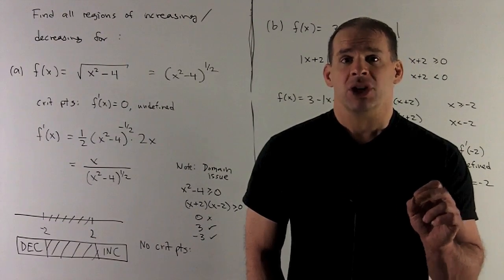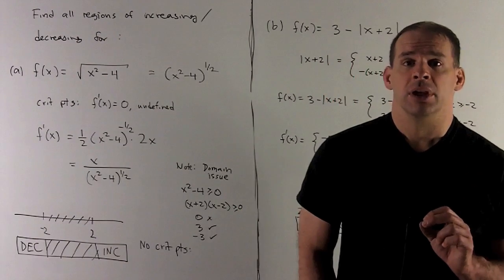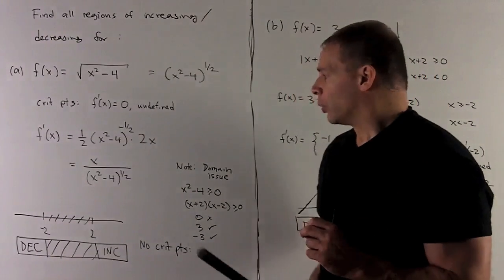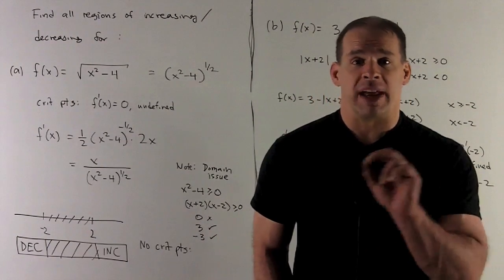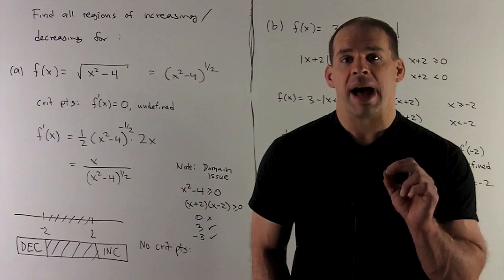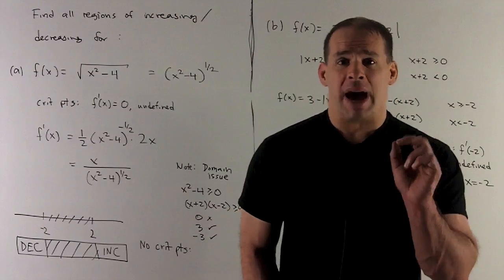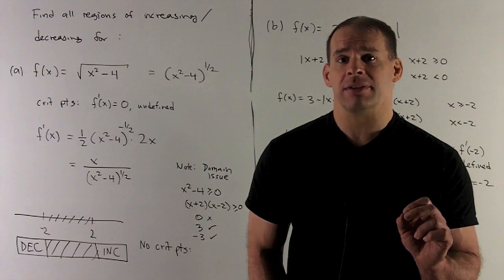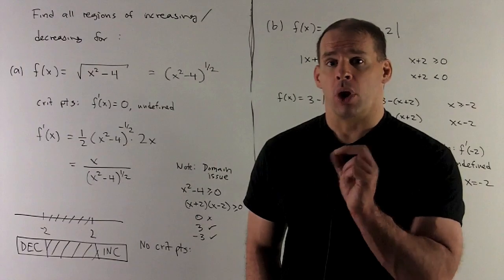With no critical points, we just check one point in each region. Plugging 3 into the derivative, the numerator is 3 (positive) and the square root in the denominator is always positive, so the derivative is positive — the function is increasing for x ≥ 2. Plugging in minus 3, the numerator is negative and the denominator is still positive, so the derivative is negative — the function is decreasing for x ≤ -2.